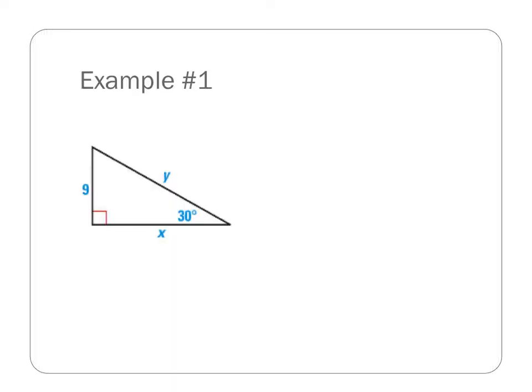Looking at example number 1, I have a 90 degree and a 30 degree, which means my last angle is 60 degrees. So I have 30, 60, 90, L, L root 3, and 2L. Now I need to look at what do I have. I have the side across from the 30, so under the 30 I'm going to write 9. This tells me that L equals 9. L root 3 then is going to be 9 root 3, and 2 times L, 2 times 9, is going to be 18.